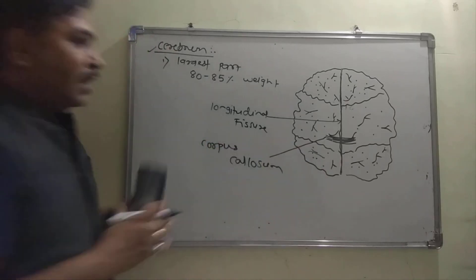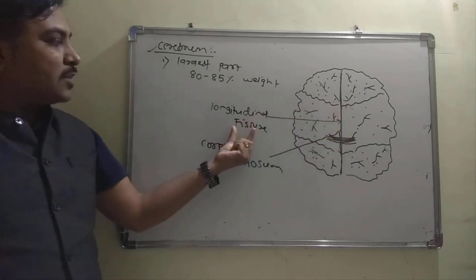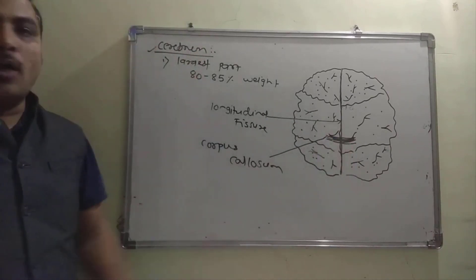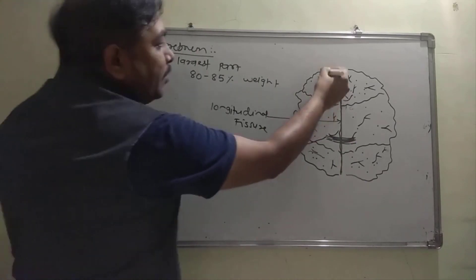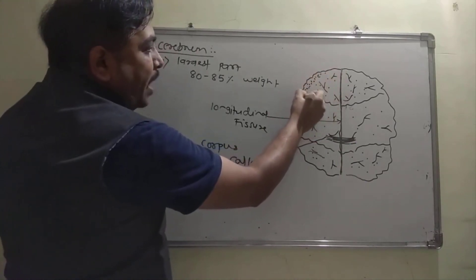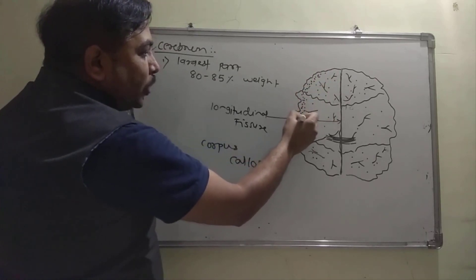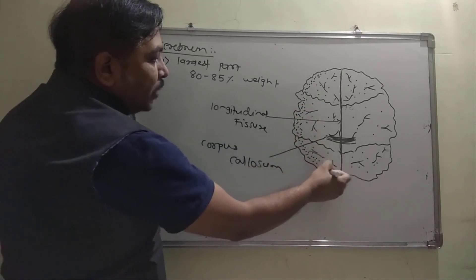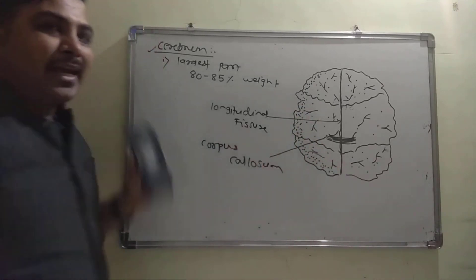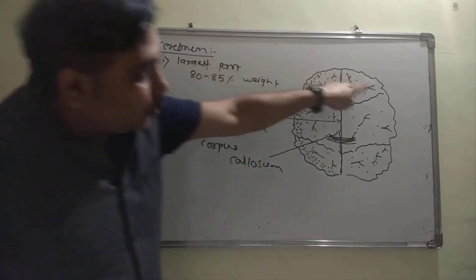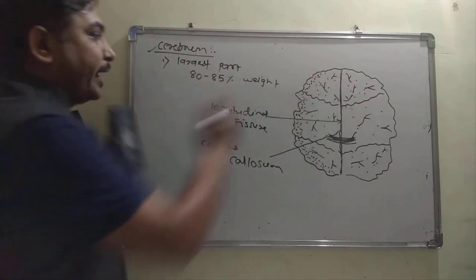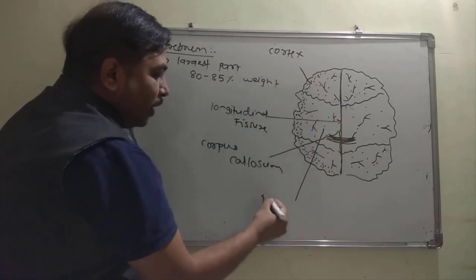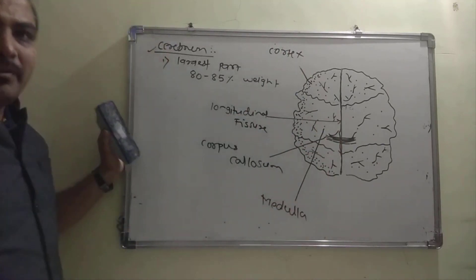So two concepts: if separation between hemispheres is asked, the answer is longitudinal fissure; if connection is asked, the answer is corpus callosum. The peripheral portion of each hemisphere is called the cerebral cortex, and the inner region is called the cerebral medulla.